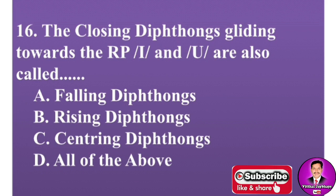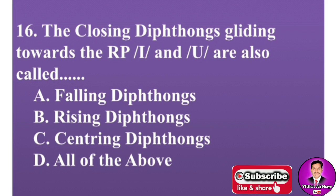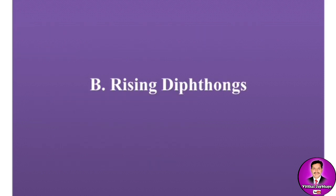Next MCQ: The closing diphthongs gliding towards the received pronunciation /i/ and /u/ are also called — options are: A, falling diphthongs; B, rising diphthongs; C, centering diphthongs; D, all of the above. The correct answer is B — rising diphthongs.